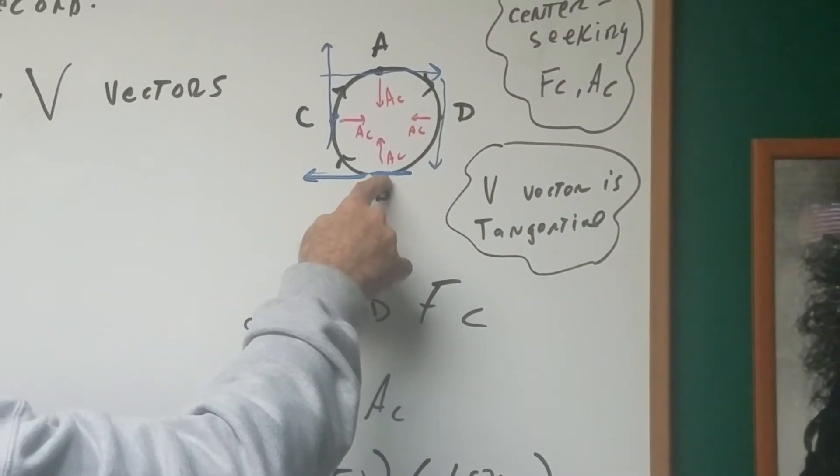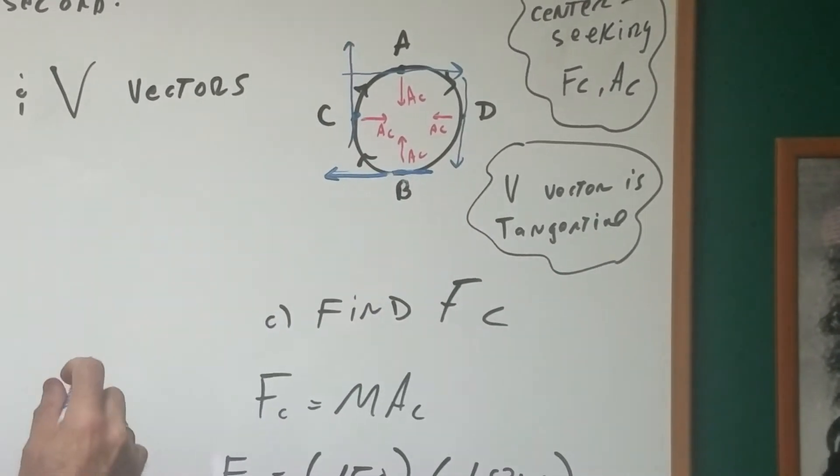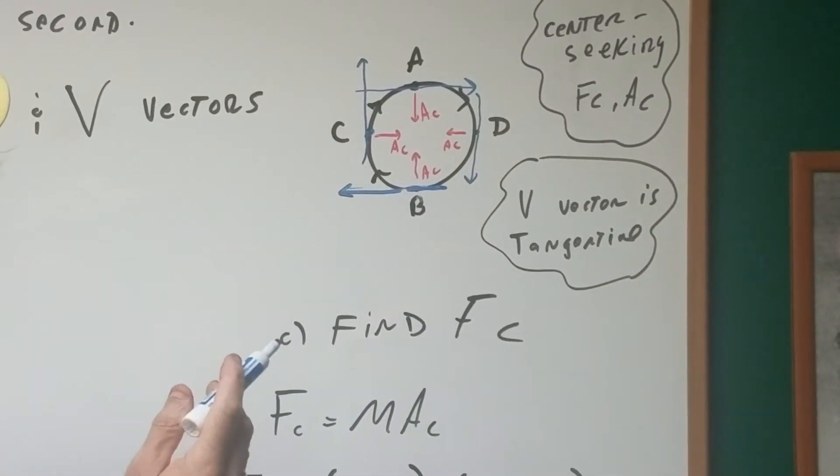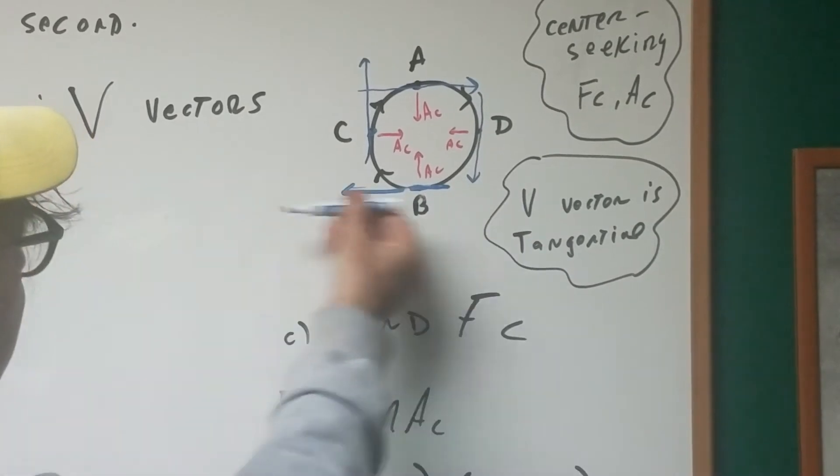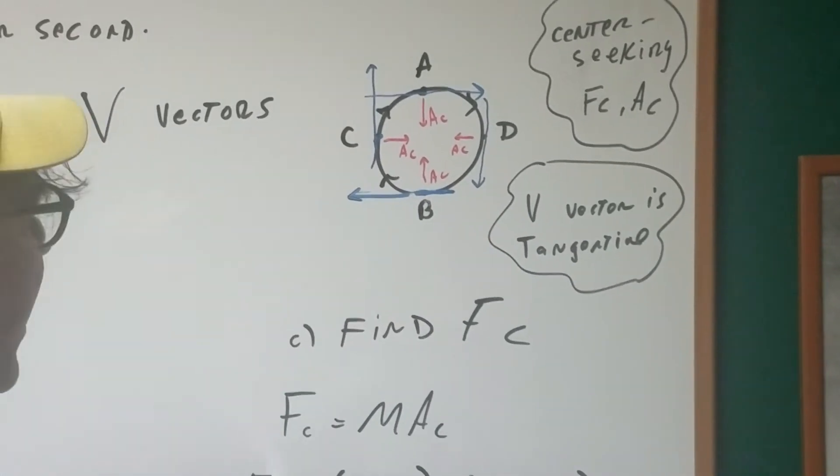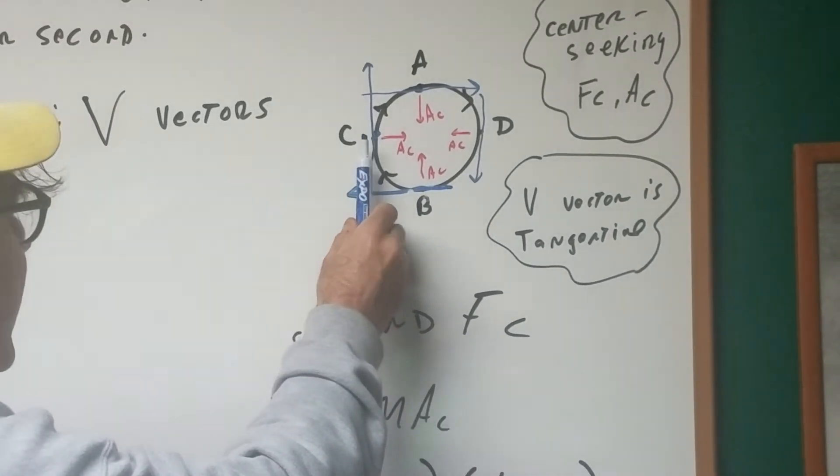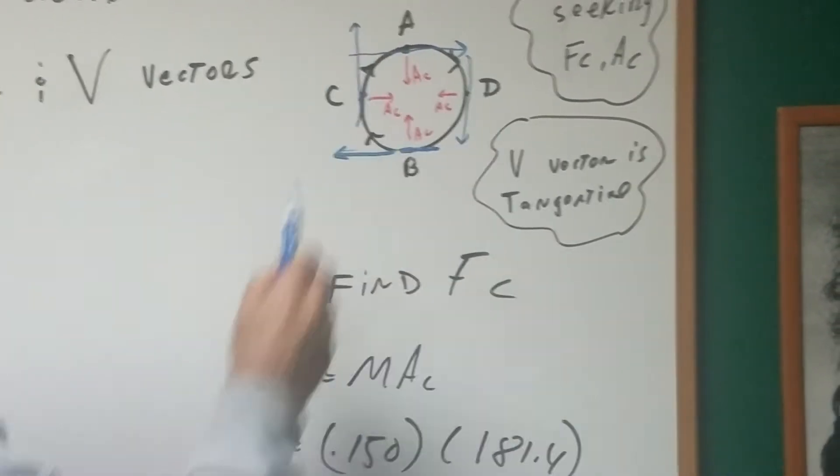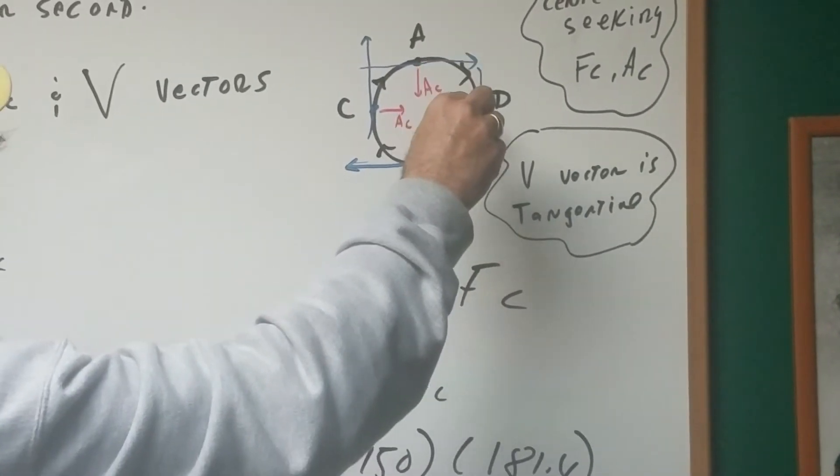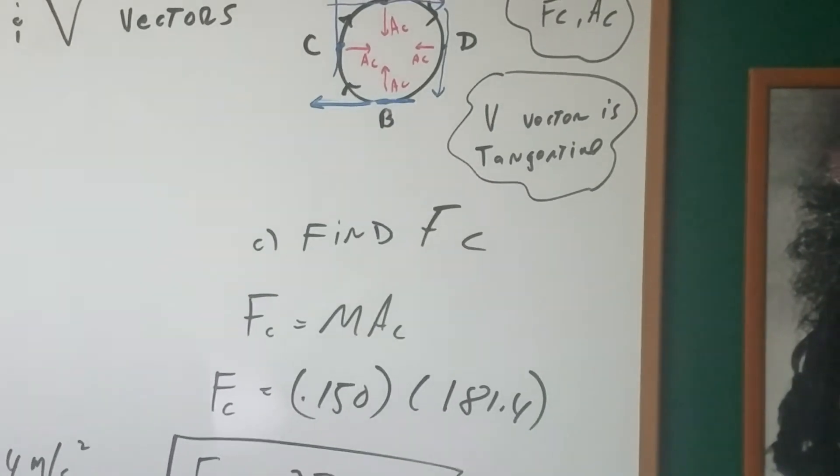So if I ever said to you, you were at point B at the bottom of the arc and the string broke, where would it go? It would go tangent, meaning it would go to the left. If you were at point C, where's the tangent line? It would be going up. And at D, it would be going down. So that's how you would draw those vectors.